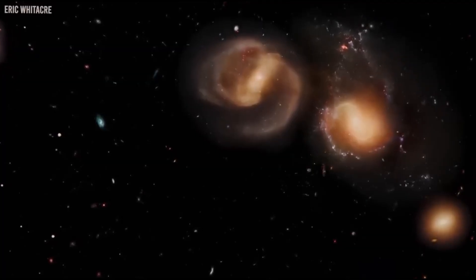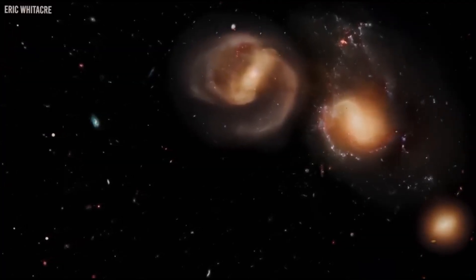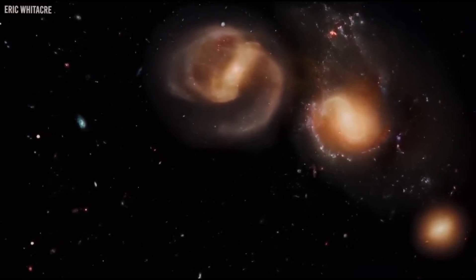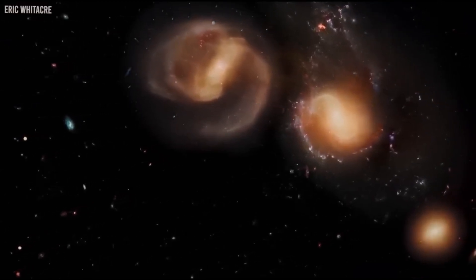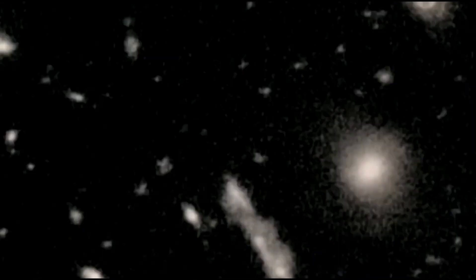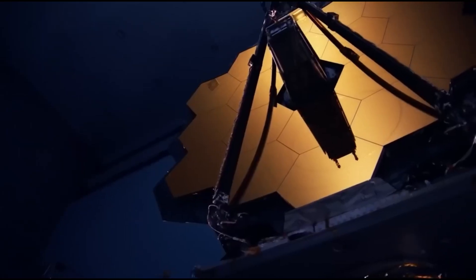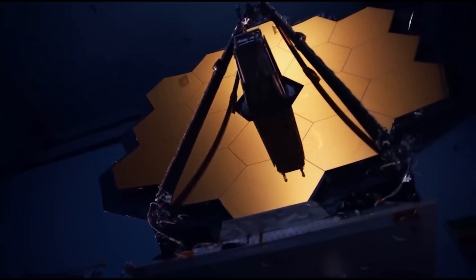To achieve this, the telescope must be extremely cold, precisely below 370 degrees Fahrenheit, protected by a five-layer sun shield. The telescope also boasts a faster and more powerful onboard computer than the Hubble.